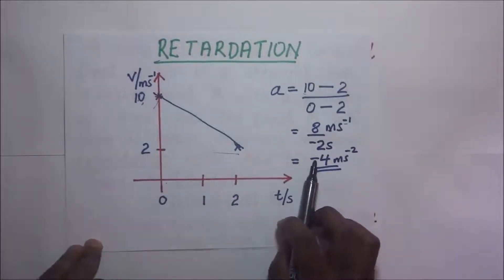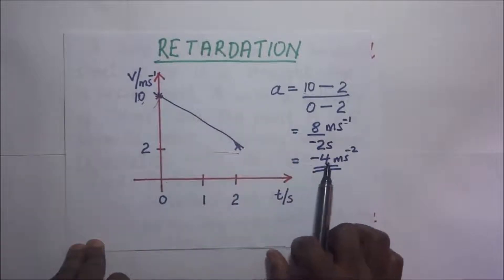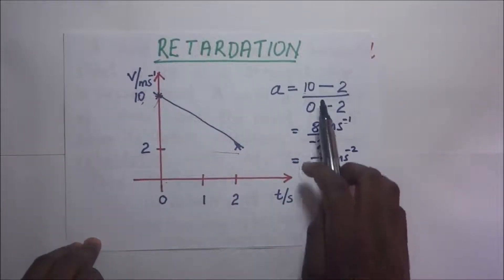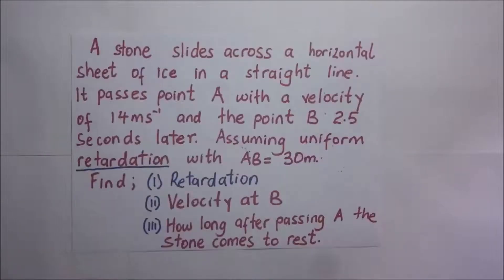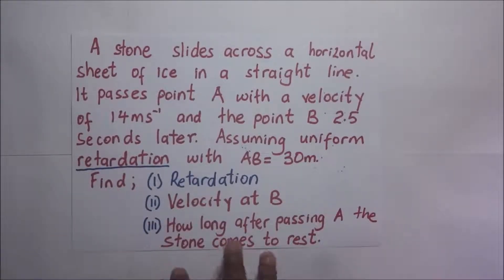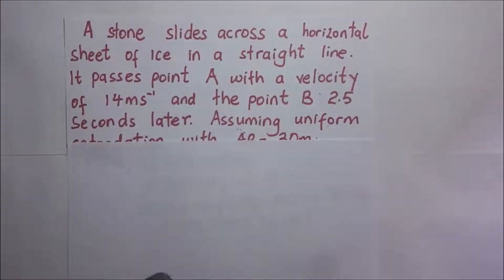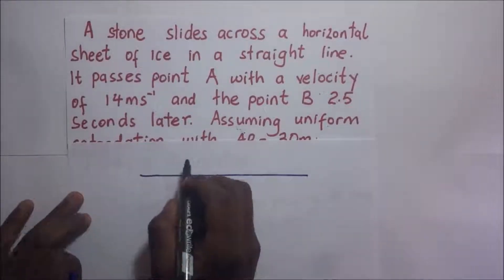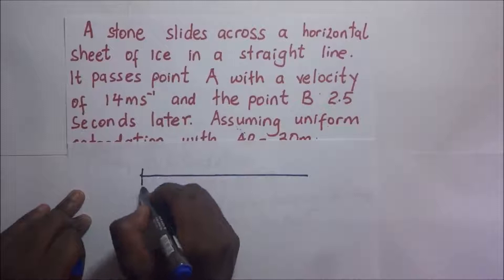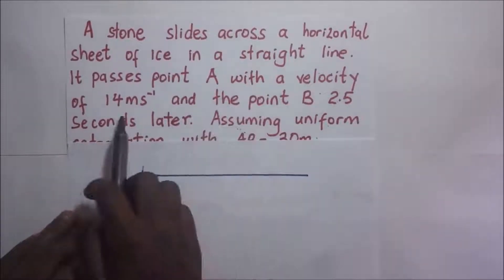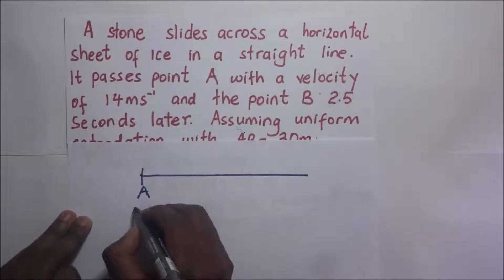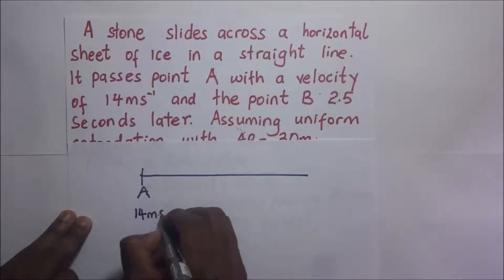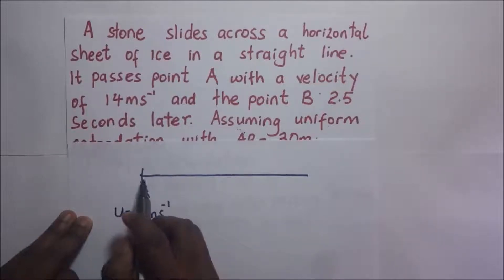This negative value — the negative acceleration — is signifying retardation. It is signifying that the rate of change of velocity with time is reducing. Now we have a stone that slides across a horizontal sheet of ice in a straight line. We are going to summarize this question with a diagram first, then solve it. The stone passes point A with a velocity of 14 meters per second, so at point A the velocity is 14 meters per second — let's call this our initial velocity.